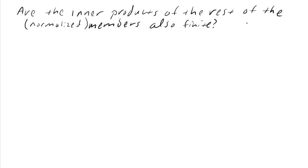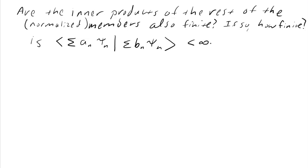Are the inner products of the rest of the normalized members also finite? I say normalized - that doesn't exclude any answer because nobody has an expansion coefficient of infinity. We'll assume all members are normalized. If so, how finite? That follow-up question gives away the answer to the first question. If I'm asking is the inner product finite, the real question is: is one particular sum taking the inner product with another particular sum - they're not the same sums - less than infinity? We can argue that it's less than infinity. The person who proved it knows how to prove the Schwartz inequality.